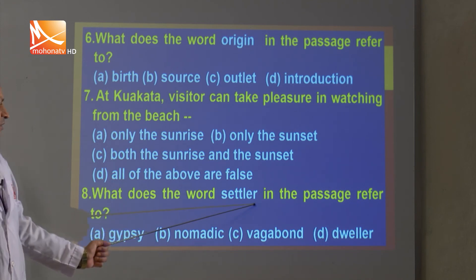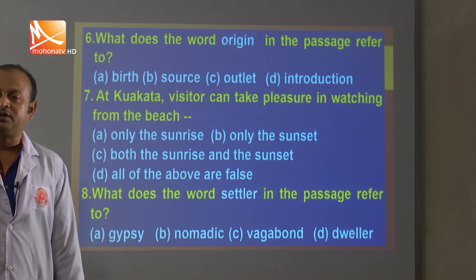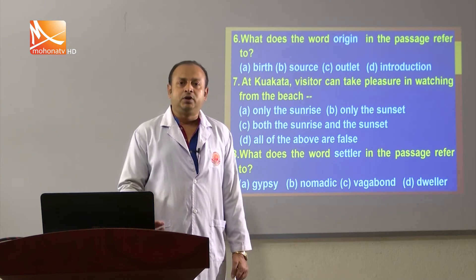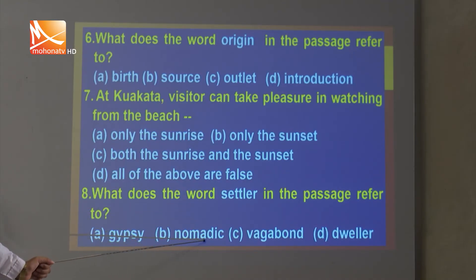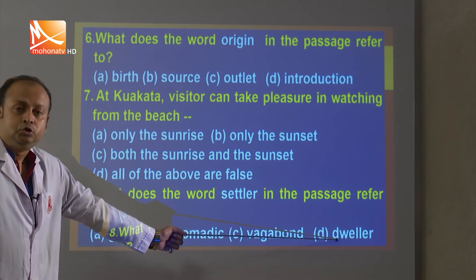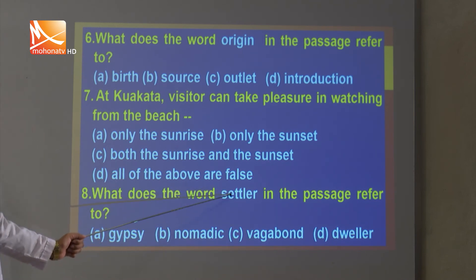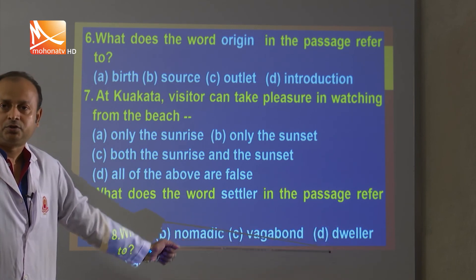Question 8: What does the word 'settler' in the passage refer to? Settler means someone who makes a place their home — a dweller. So 'dweller' is the correct option.